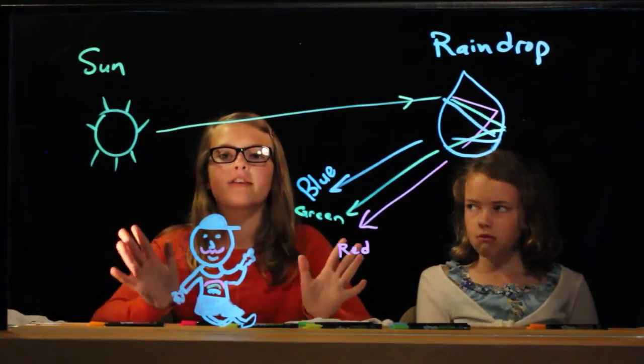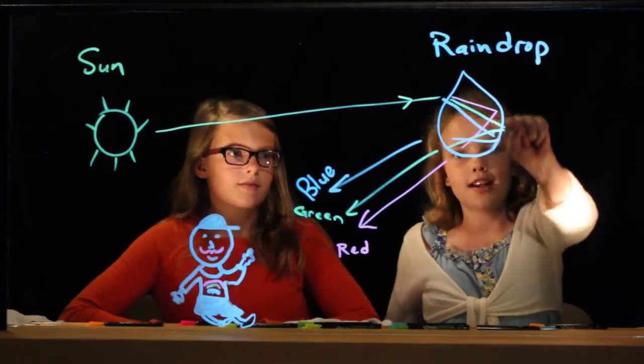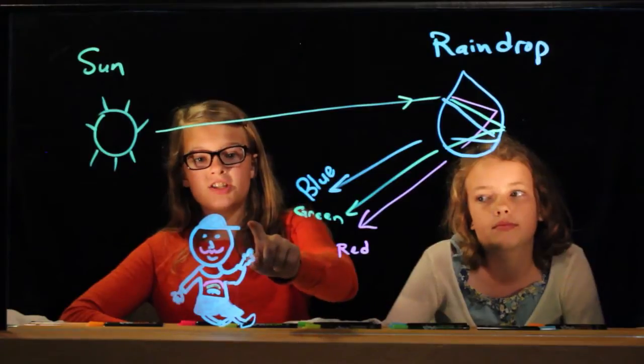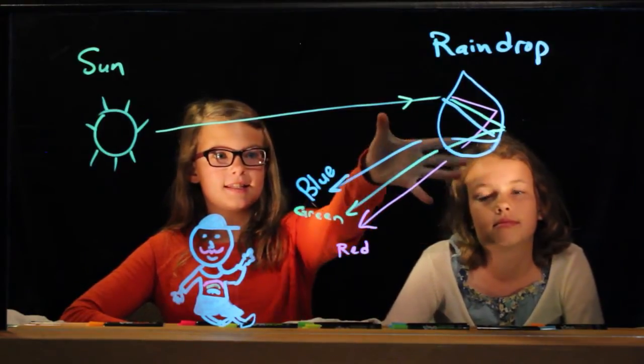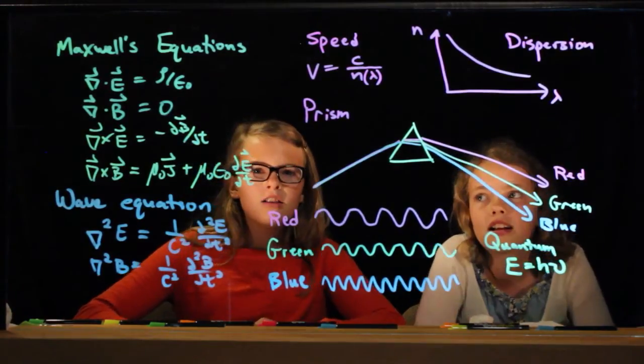So this is how rainbows work. The sun emits all the colors, which travels to the raindrop. Inside the raindrop are three different colors that take different paths. So when Mustache Jude looks up, he sees different colors. Oh, I get it. Oh, I get it.